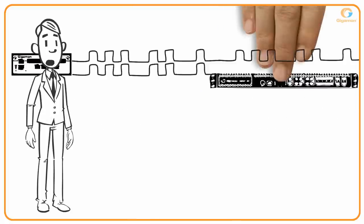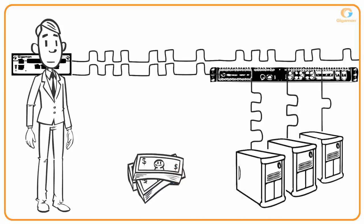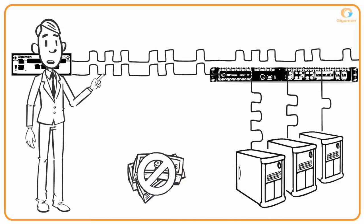This feeds into a Gigamon visibility fabric node which can load balance the traffic across multiple IDS server ports, which saves them adding expensive new high-speed appliances.